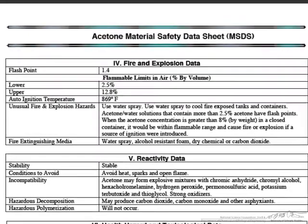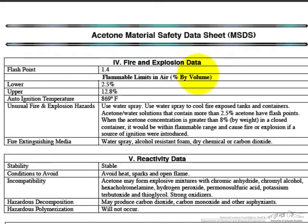As we scroll down we come across this section on fire and explosive data. We can see that the flammable limits in air percent by volume are 2.5% and 12.8%. Meaning that if the acetone concentration by volume in the environment is between those two values it does pose to be an explosive hazard.